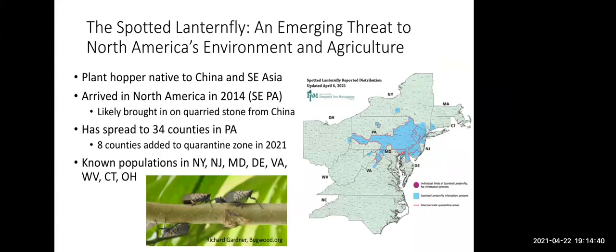Now let's move on to spotted lanternfly in particular. It's not actually a fly — it's a plant hopper native to China and Southeast Asia. It's a recent arrival, first detected in Berks County, Pennsylvania in 2014, and is thought to have been brought in as egg masses on quarried stone from China. Since 2014 it has spread to 34 counties in Pennsylvania, including eight counties added to the quarantine zone in 2021. It has also spread to New York — mainly downstate and Tompkins County — as well as New Jersey, Maryland, Delaware, Virginia, and as of this year, one county each in West Virginia, Connecticut, and Ohio. So it's spreading pretty rapidly.